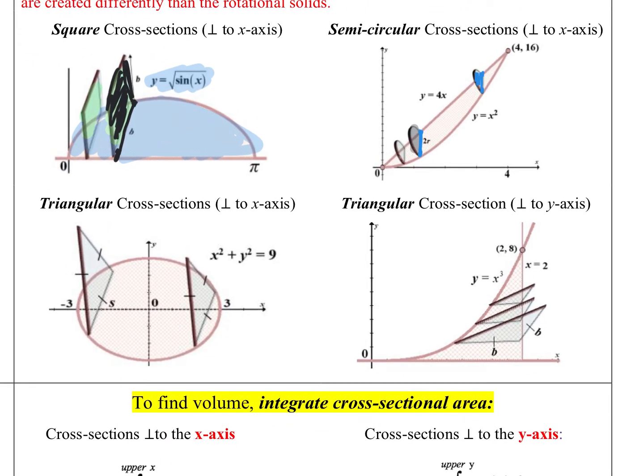You might have cross-sections that are triangular in shape. Notice that the first three examples—the one with the squares, the semicircles, and the first one with triangles—those cross-sections are going perpendicular to the x-axis. And in the second one, my cross-sections are going perpendicular to the y-axis. So in the first three, that would be an integration with respect to x. And this last one, because I am going perpendicular to the y-axis, this would be an integration with respect to y. In the whole big picture, the first three are going to be more important to you.